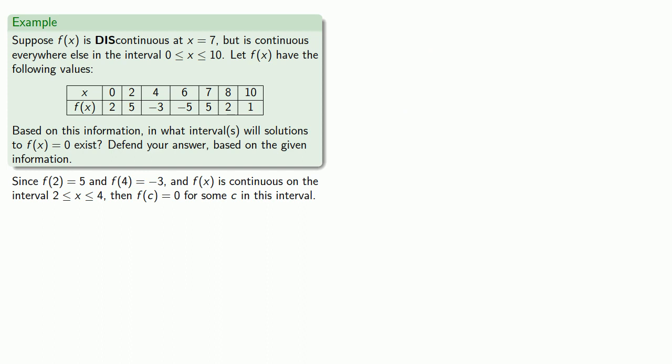What about this other interval? We see that f of 6 is negative 5, which is too small. And f of 7 is 5, which is too big.